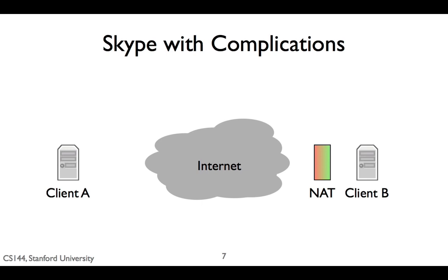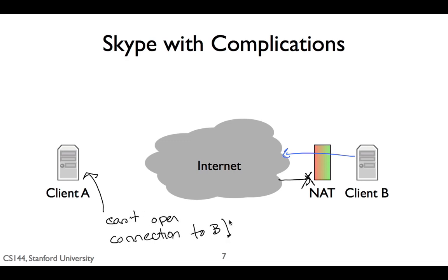The complication comes from something called a NAT, or Network Address Translator. NATs are everywhere today — a small home wireless router is a NAT, and when a mobile phone connects to the internet, it's behind a NAT. We'll cover them in greater detail later in the course, but for now, all you need to know is that if you're behind a NAT, you can open connections out to the internet, but other nodes on the internet can't easily open connections to you. In this example, client B can open connections to other nodes freely, but it's very hard for other nodes to open connections to client B — that's what this red-green gradient is showing. Connections coming from the green side work fine, but connections coming from the red side don't. So if client A wants to call client B, it can't open a connection through the NAT, and Skype has to work around this.